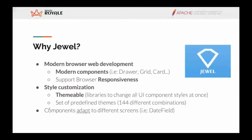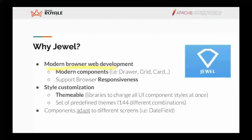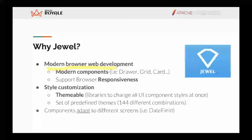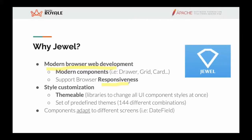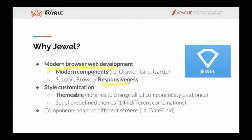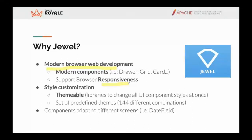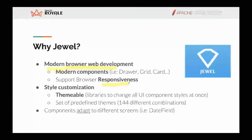Why Jewel? Why use Jewel and not another UI set? The most important thing is we want to use modern browser web development with modern components like a drawer, a grid, a card - because things need to go mobile and we want responsiveness. The screen size should adapt to mobile, tablet, desktop, or a bigger screen. All these things in the Flex days were not here, so we had to implement a new component set. This is Jewel.